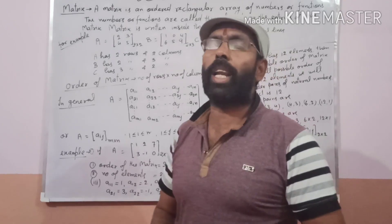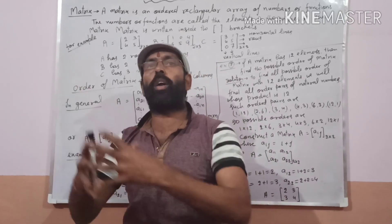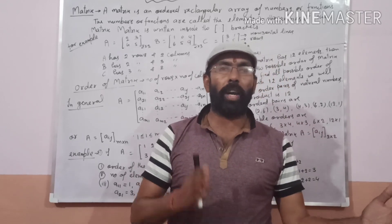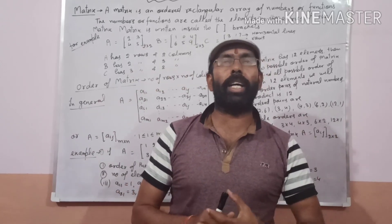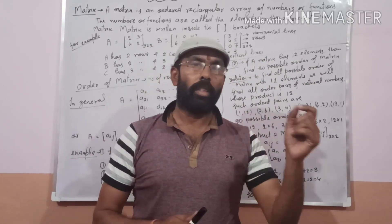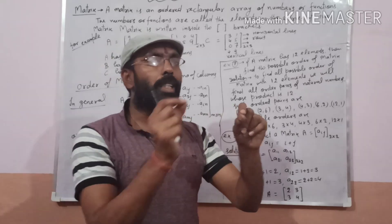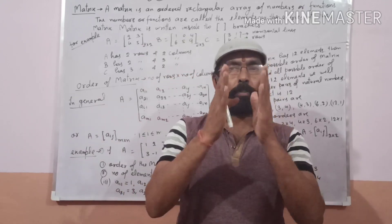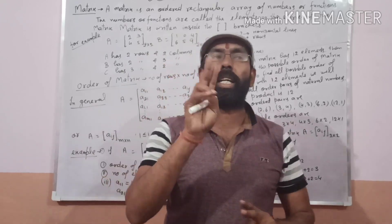Let us take another example. If you have 5 elements, we find ordered pairs whose product is 5: 1×5 and 5×1, so there will be exactly 2 orders. Similarly for 9 elements: 1×9, 9×1, and 3×3 — that gives 3 orders. For prime numbers like 5, 13, 17, 7, a prime number has exactly 2 orders.